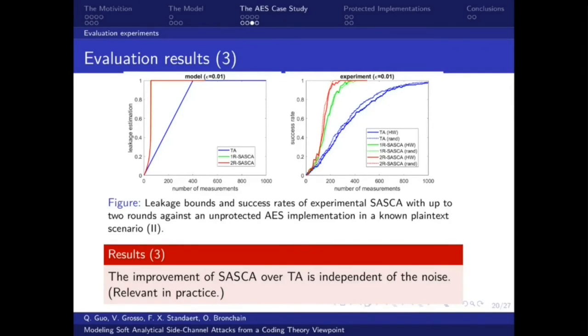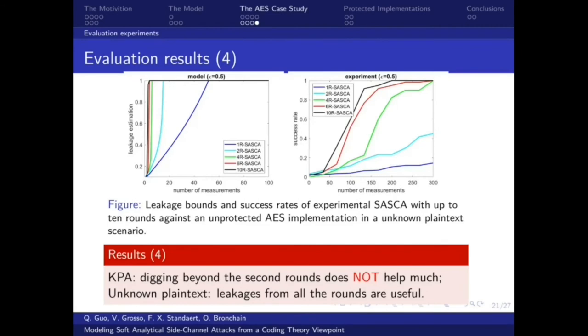We also do the experiments in the higher noise scenario. Our conclusion is that the improvement of SASCA over DPA is independent of the noise. This is particularly relevant in practice because we can then compute the constant factor between the conservative model and the real attacks, and this will hold independent of the noise. We also run the model and the experiment in an unknown plaintext scenario with up to 10 rounds. Our results show that in the known plaintext scenario, digging beyond the second round does not help much. But in an unknown plaintext scenario, leakages from all the rounds are very helpful.